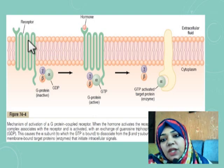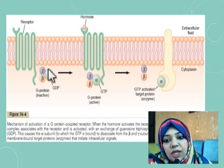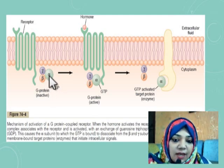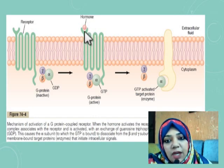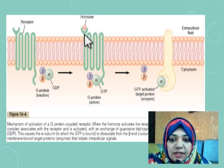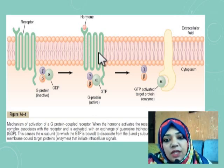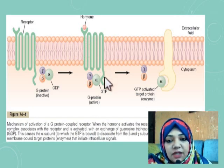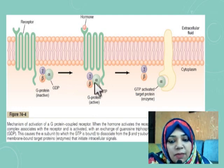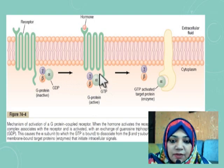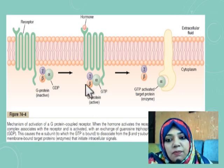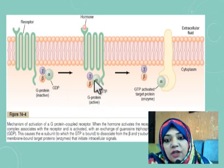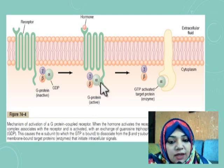So we have three structures: the cell membrane, the receptor for the protein hormone in the cell membrane, and the G protein which is a complex structure with three subunits. In the next stage, the hormone comes and binds with the receptor, forming the hormone-receptor complex. This activates the receptor, causing a conformational change, and the G protein then goes and binds with the cytoplasmic tail of the receptor. G protein also replaces GDP with GTP.